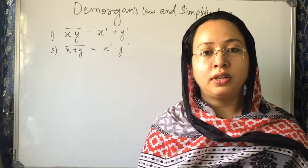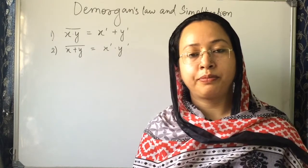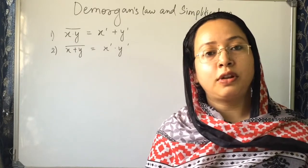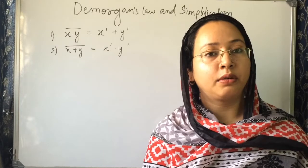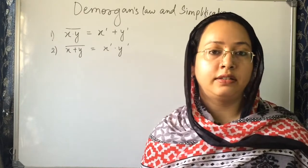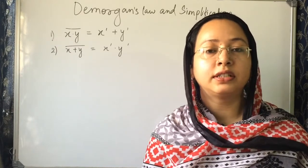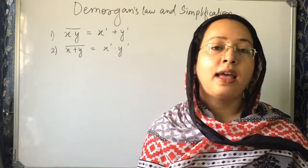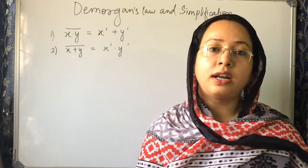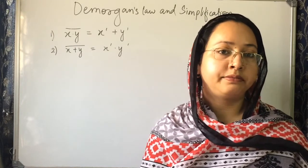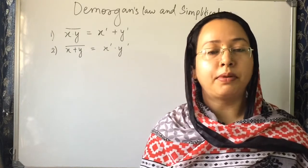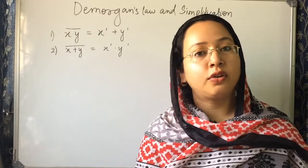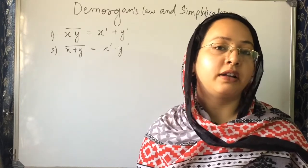what we have to do: if a variable is written as x in the function, then in its dual it will be x bar. Plus will be converted to dot and dot will be converted to plus, and every variable will be complemented in its dual function. And 0 will be converted to 1 and 1 will be converted to 0.